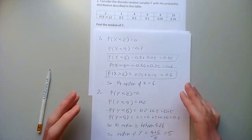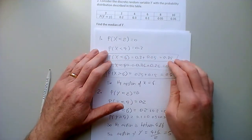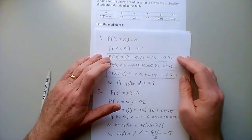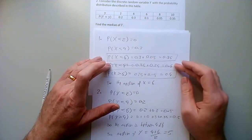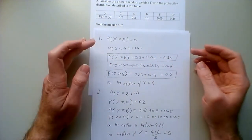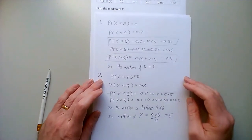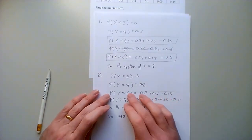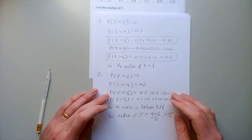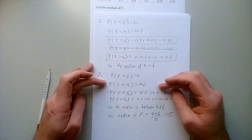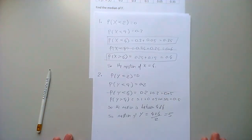So the running total strategy works really well. The moment you get more than half, the one before that is the median. And if you get exactly half, then the median is halfway between that value and the one before it.